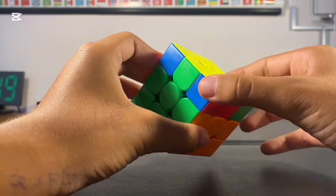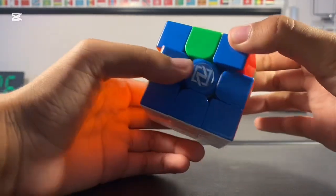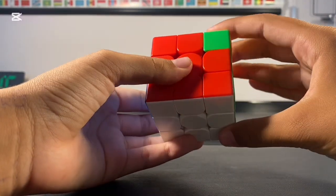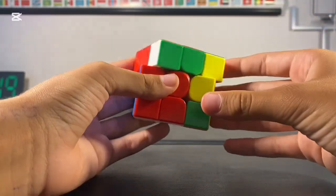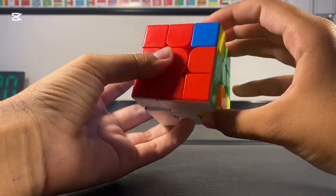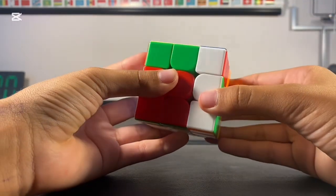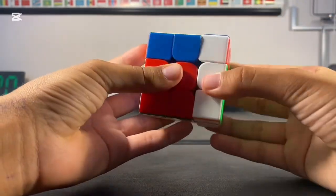Number one, headlights. This means that there are two corners next to each other with the same sticker, just like car headlights. In this case, place the cube like this and do the following algorithm. R-U-R prime U-R prime F-R-2-U-R prime U-R prime F prime.